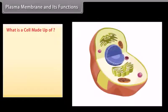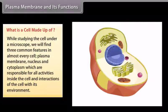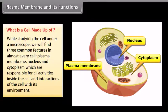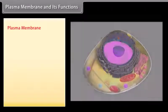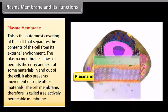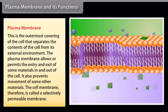Plasma membrane and its functions. While studying the cell under a microscope, we find three common features in almost every cell: plasma membrane, nucleus, and cytoplasm, which are responsible for all active activities inside the cell and interactions with its environment. The plasma membrane is the outermost covering of the cell that separates the contents of the cell from its external environment. It allows or permits the entry or exit of some materials in and out of the cell, while preventing movement of some other materials.